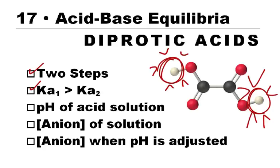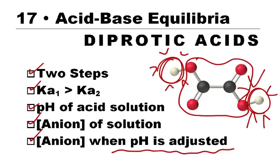The three calculations: we want to look at what's the pH of just an acid solution, a diprotic acid solution. We might ask what's the concentration of the anion after it's lost those two protons. And the last thing is what's the concentration of that anion when the pH has been adjusted by adding some other acid. So it's kind of a weird question, but you can always tell what it is when it talks about the pH has been adjusted.